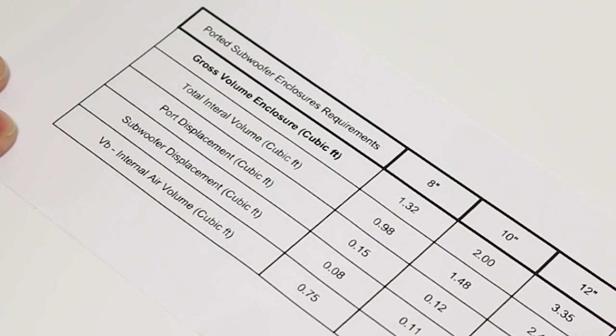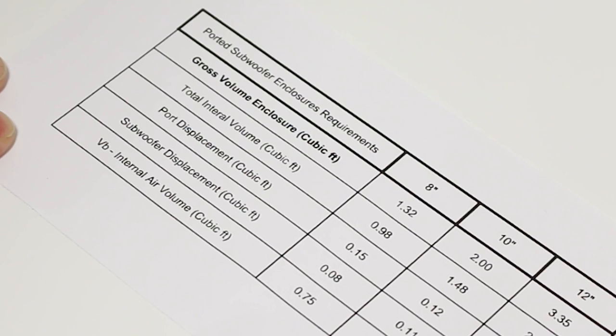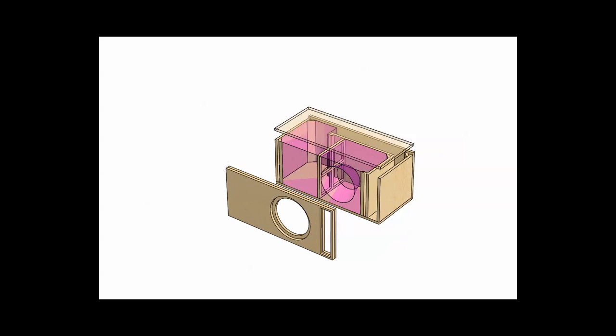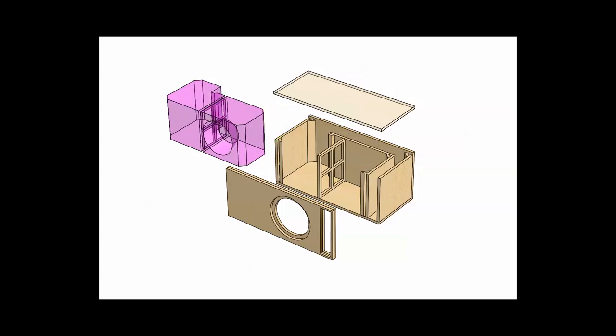So you want to build a custom subwoofer box for your subwoofer. You get out the manual and take a look, but unfortunately there are multiple different values listed for the recommended volume. On the manual you see a gross volume, a total internal volume, and then VB or air volume. Which is which? What does this all mean? And why is air volume important anyways? That, my friends, is coming on up.